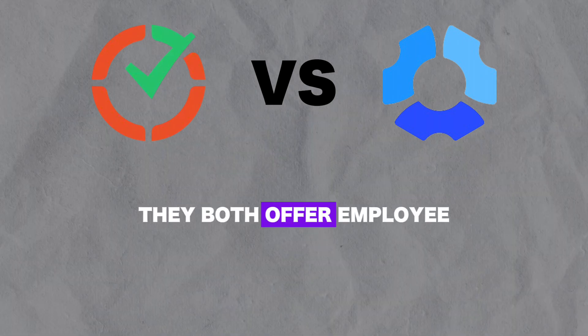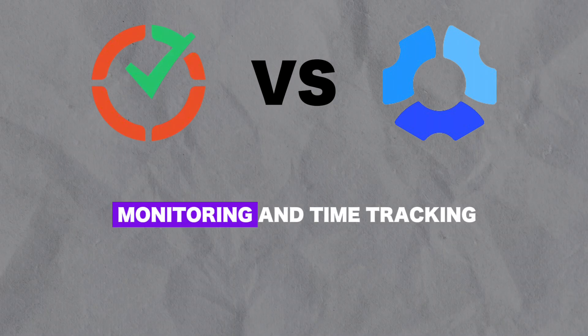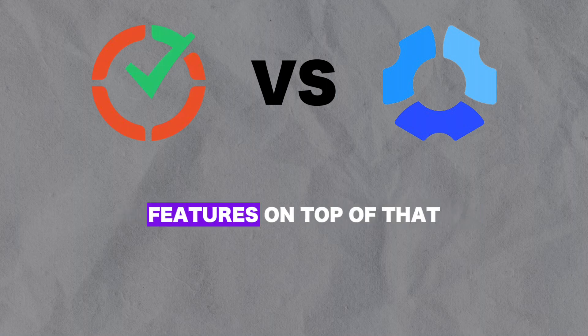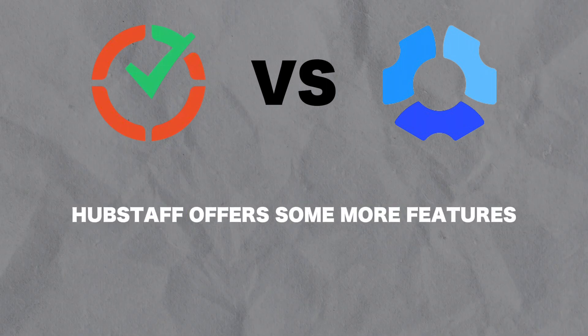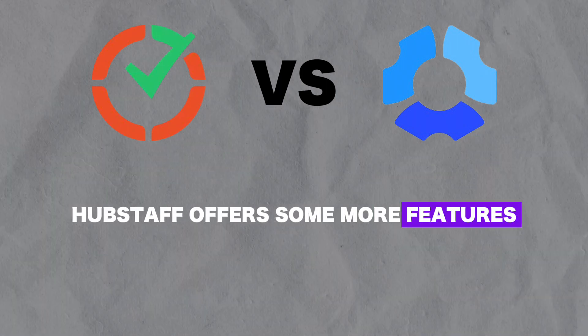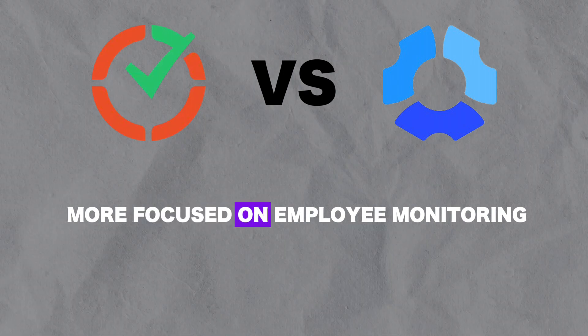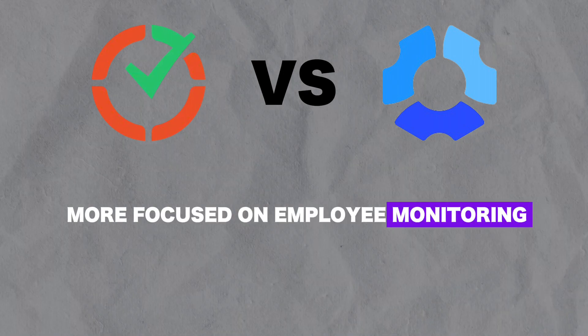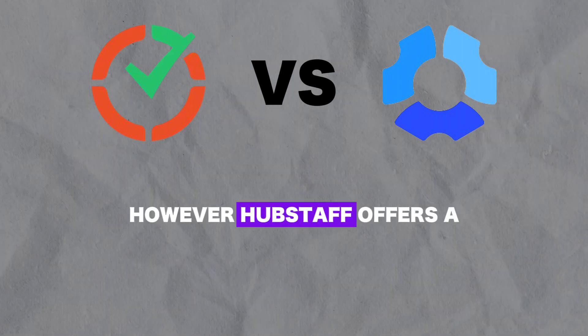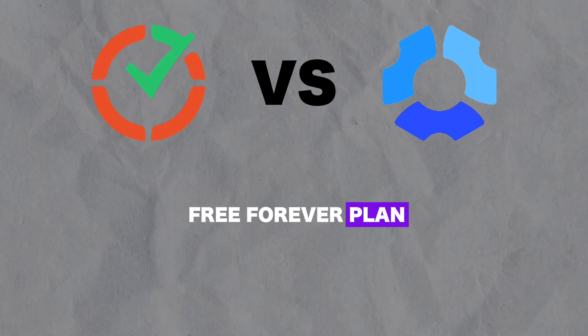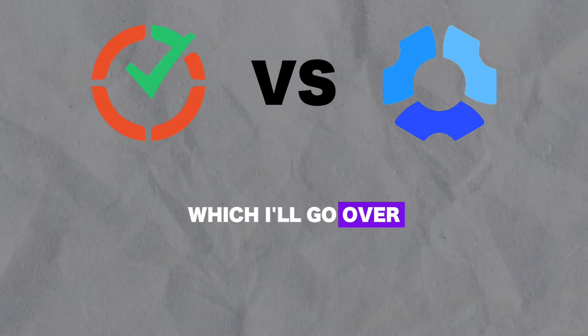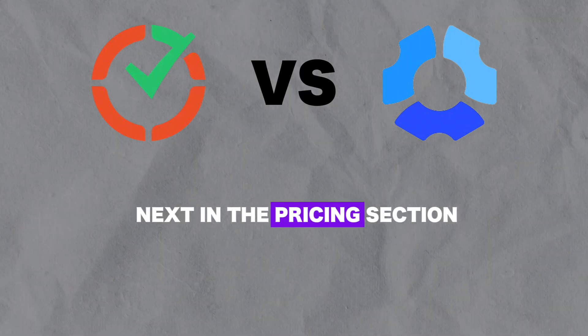They both offer employee monitoring and time tracking features. On top of that, Hubstaff offers some more features, so Time Doctor is more focused on employee monitoring. However, Hubstaff offers a free forever plan, which I'll go over next in the pricing section. That's how they stack up against each other in terms of features.